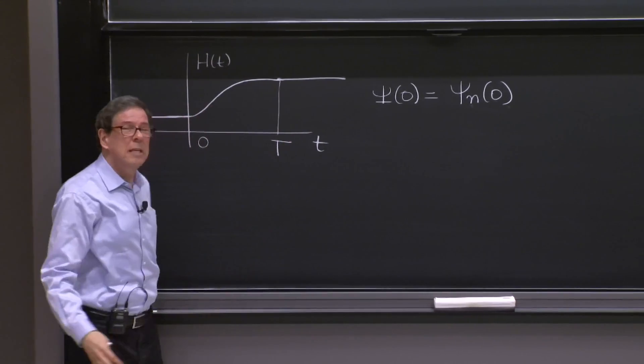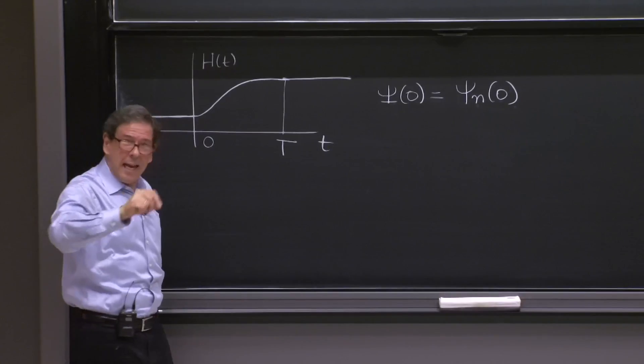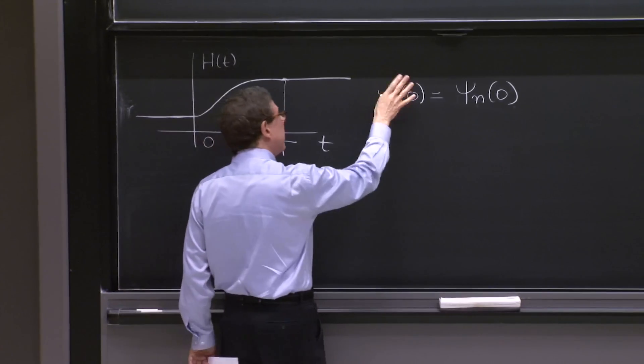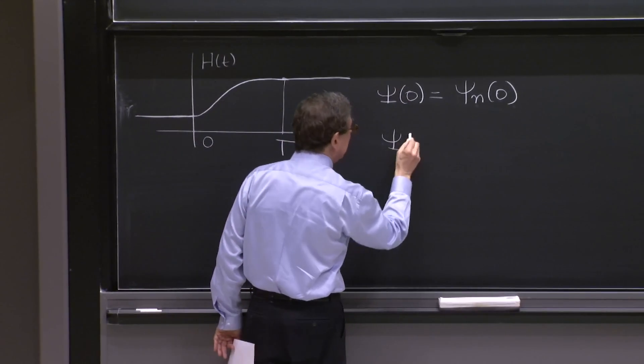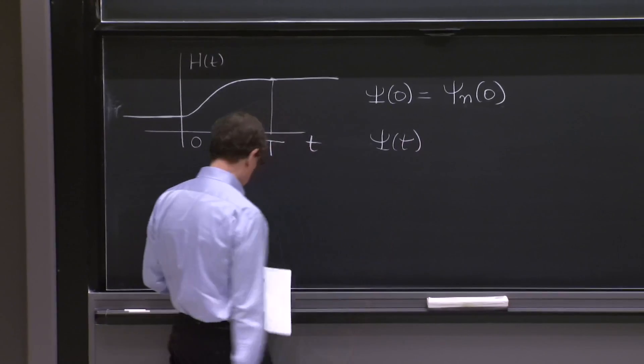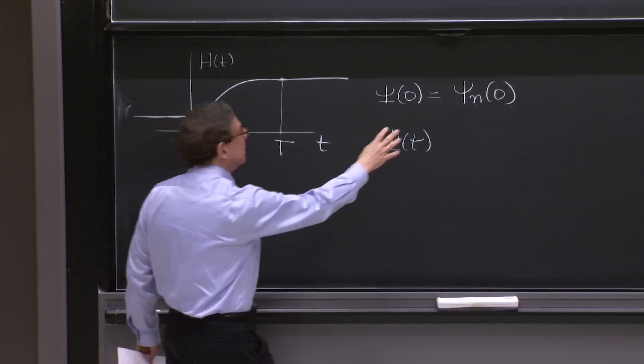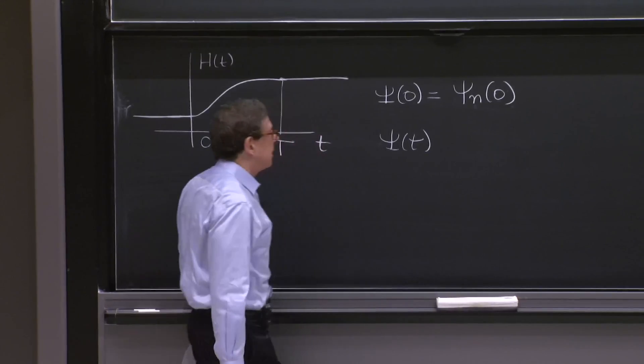Then at any time in this process, if it's slow, the process, the state of the system, the full wave function psi of t, will tend to remain in that instantaneous eigenstate.